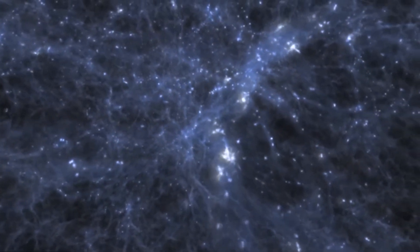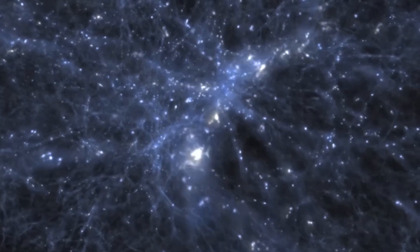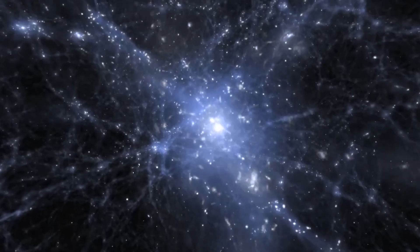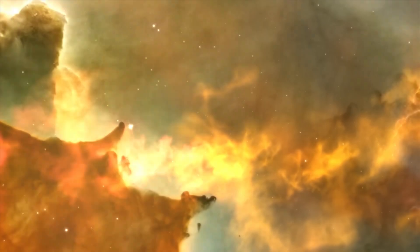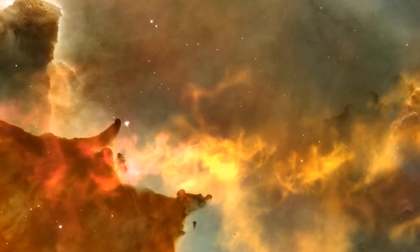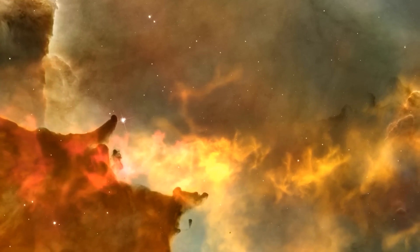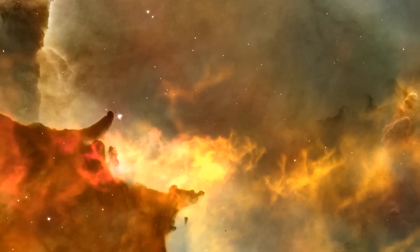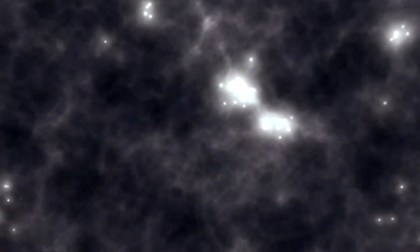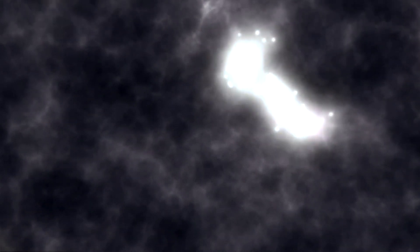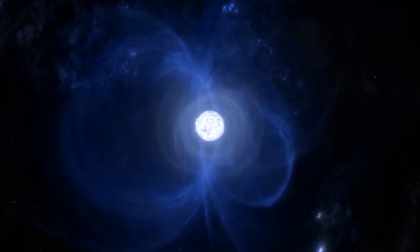The multiverse is mainly discussed in the context of quantum physics, which deals with the behavior of tiny particles such as atoms and subatomic particles. According to some interpretations of quantum physics, the act of observation can cause a quantum system to collapse into a single state. However, in the many-worlds interpretation, the act of observation simply causes the system to split into multiple states, each representing a different outcome.